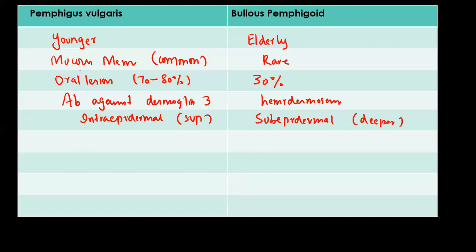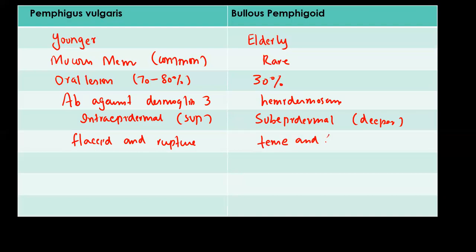The blisters in patients with Pemphigus Vulgaris are flaccid and they rupture easily. In patients with Bullous Pemphigoid, the blisters are tense and firm.